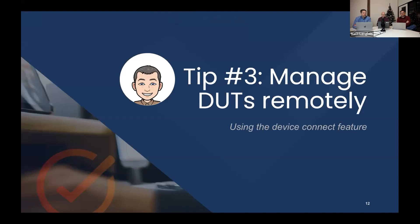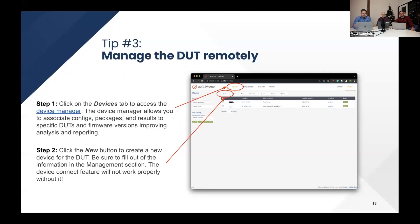Tip number three is one of my personal favorite features of CDRouter — the Device Manager. What it allows you to do is store meta information about the DUTs connected to your system. You can add information such as the current firmware version, default username and password, Wi-Fi username and password, and even upload device config files and firmware files. All done under the Devices page within CDRouter's web UI.